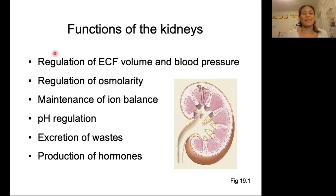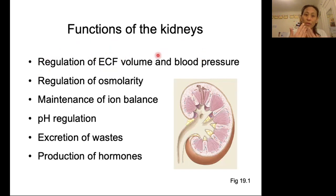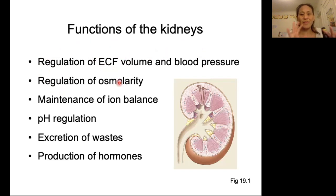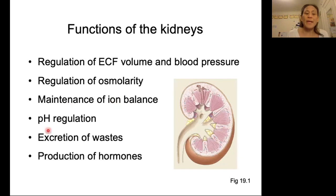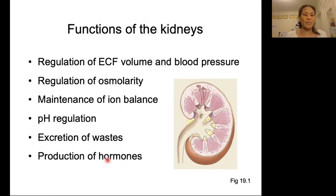Let's take a look at the specific functions of the kidneys. One function is regulation of extracellular fluid volume and blood pressure — those two are related to and influence each other. We have regulation of osmolarity, which is very important so that our cells can function properly. Maintenance of ion balance — proper ion concentrations are very important for things like neural function. pH regulation is very important because we don't want things to denature at the wrong pH. We also excrete wastes, and the kidneys do make a few hormones, including some that regulate blood pressure and calcium homeostasis.